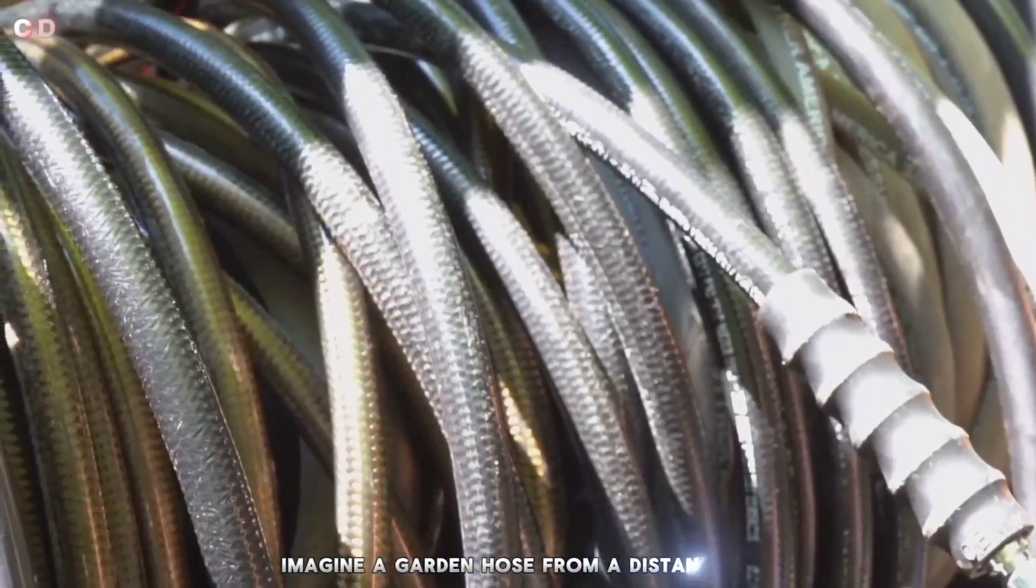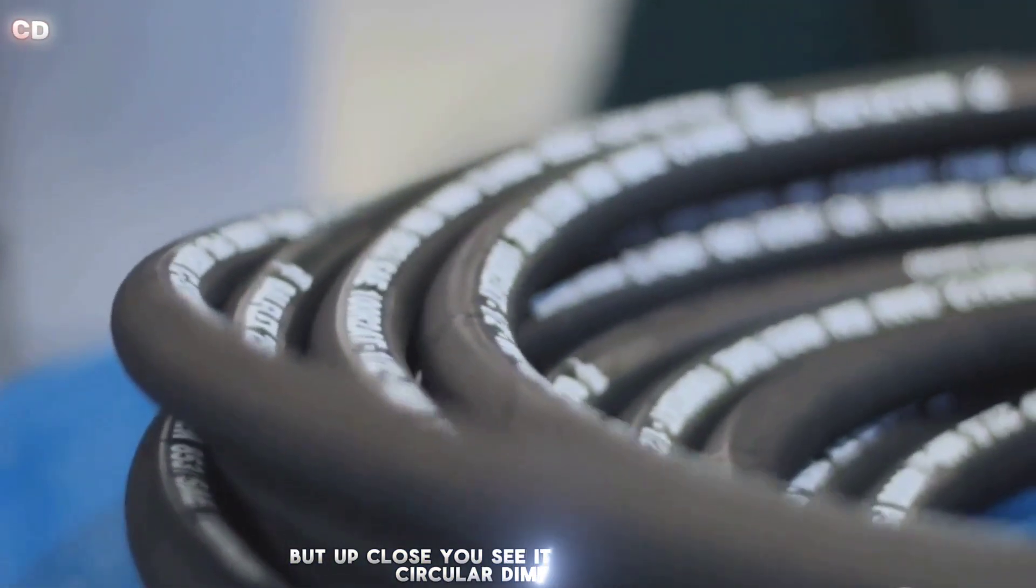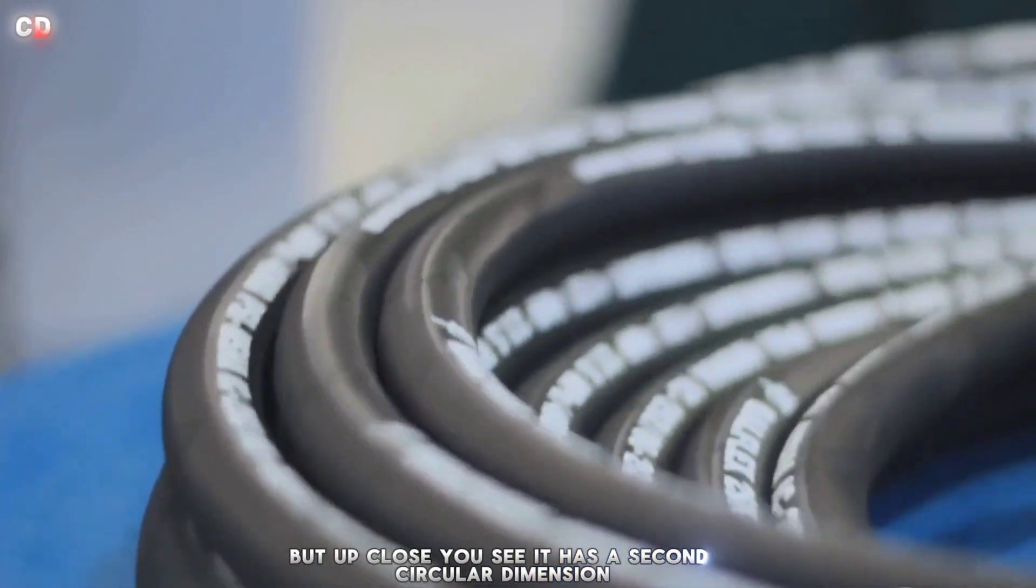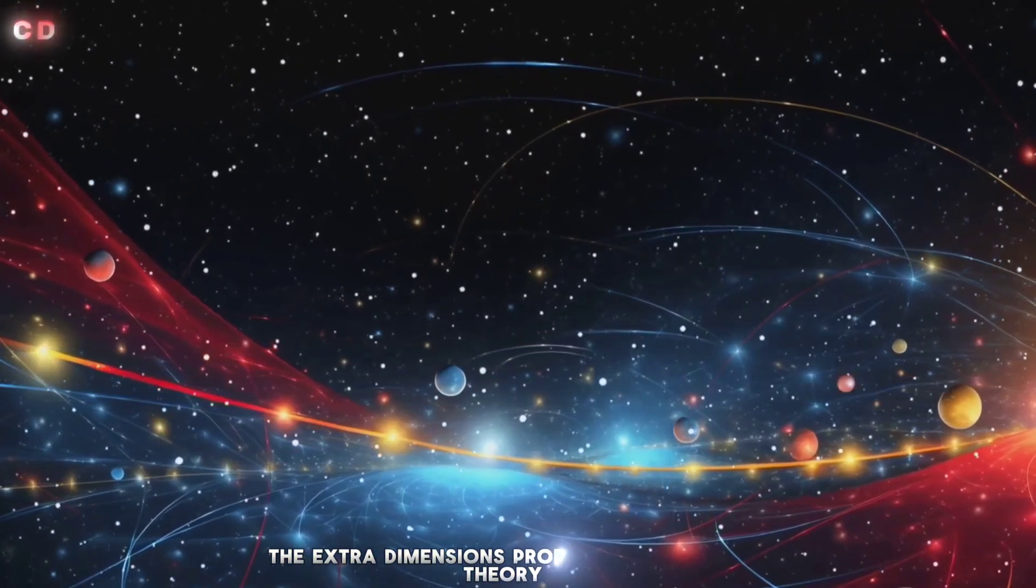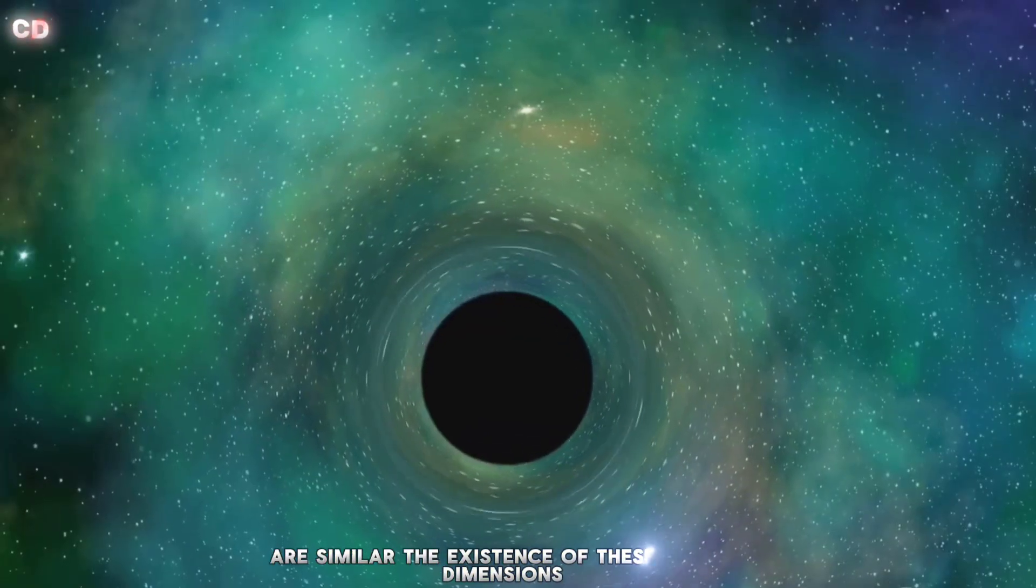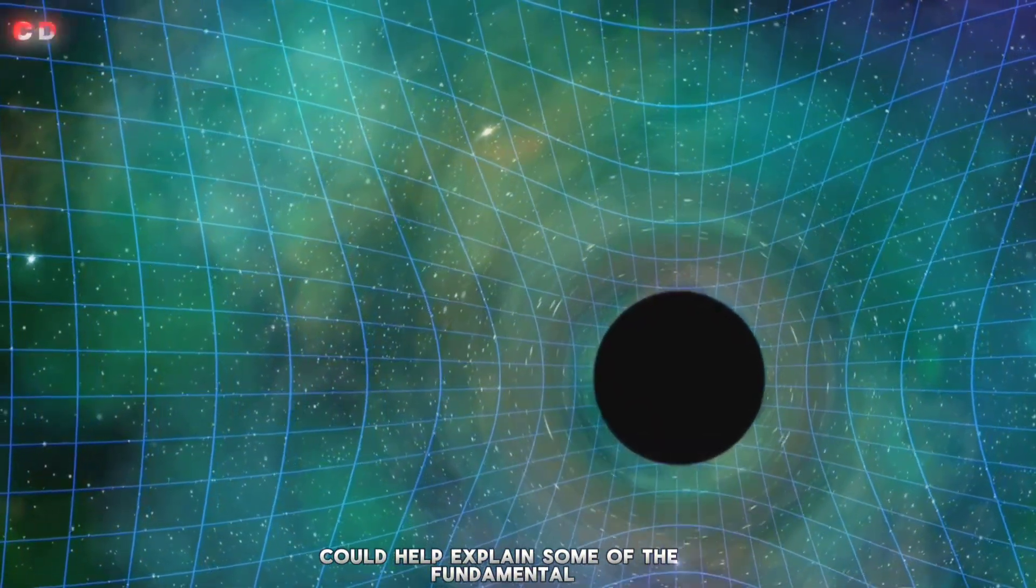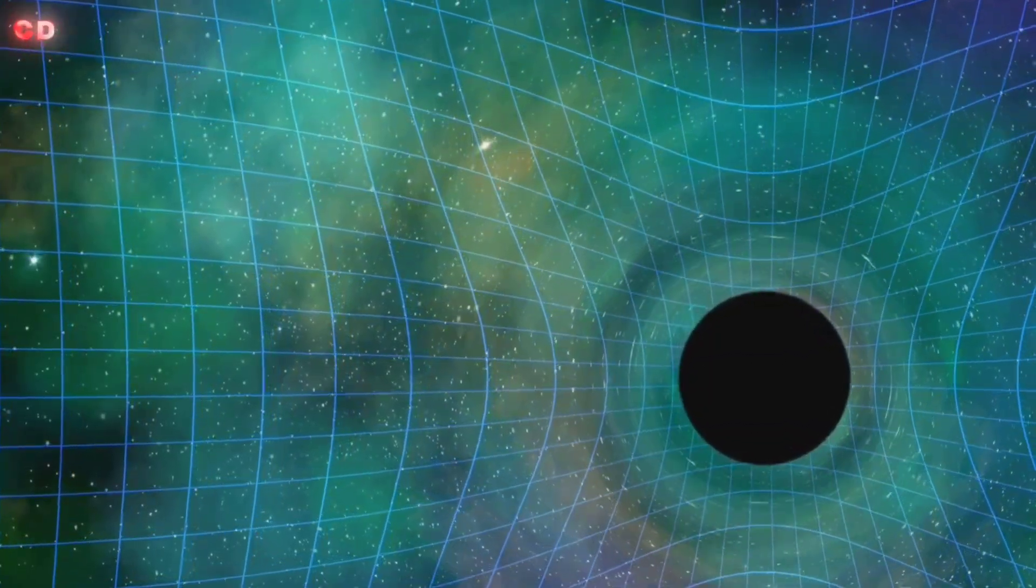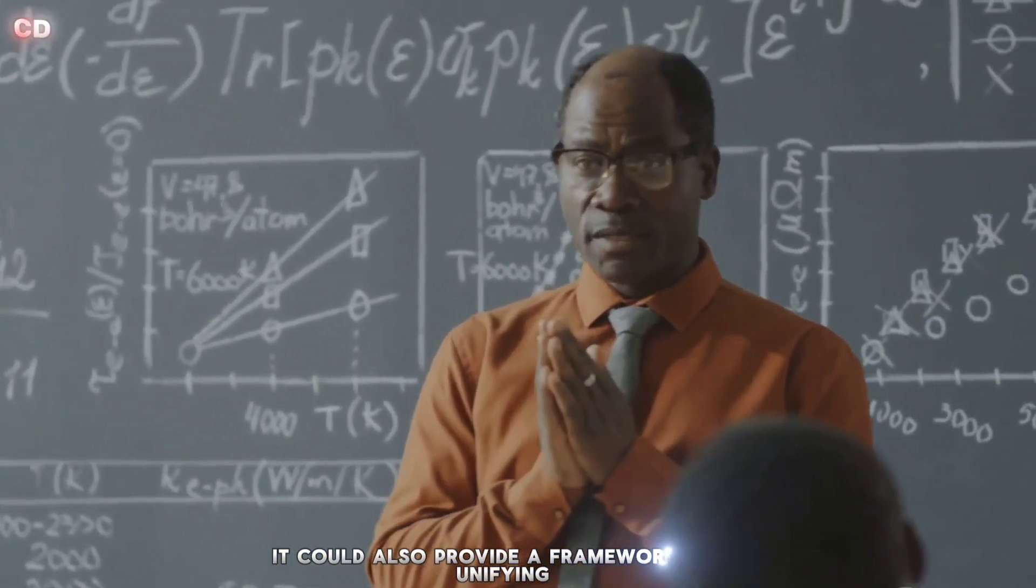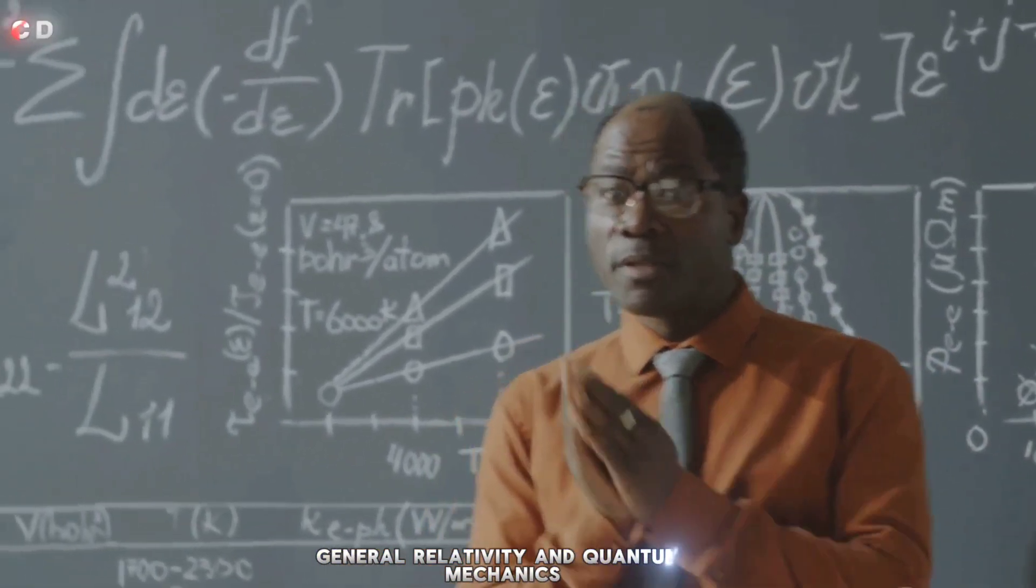Imagine a garden hose from a distance. It looks like a one-dimensional line, but up close you see it has a second circular dimension. The extra dimensions proposed by string theory are similar. The existence of these extra dimensions could help explain some of the fundamental forces of nature. It could also provide a framework for unifying general relativity and quantum mechanics.